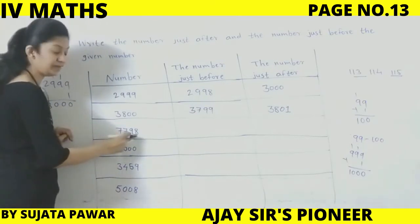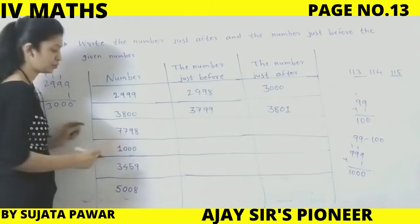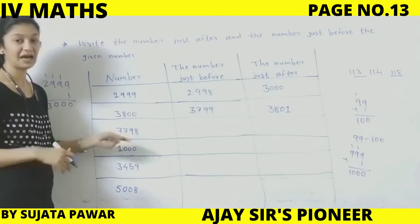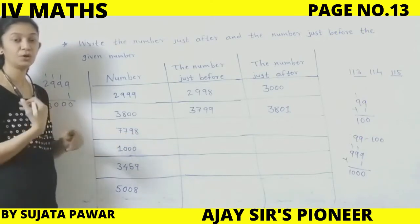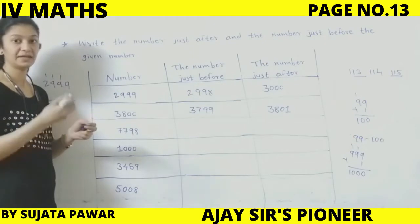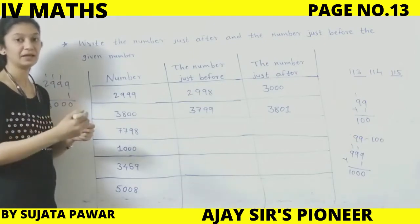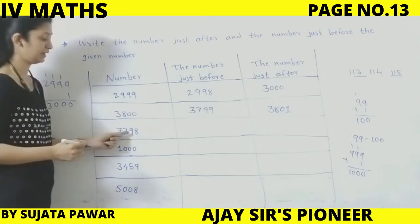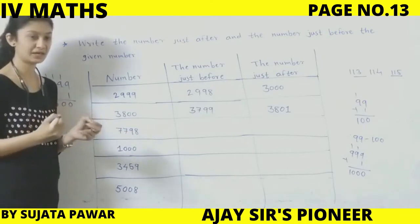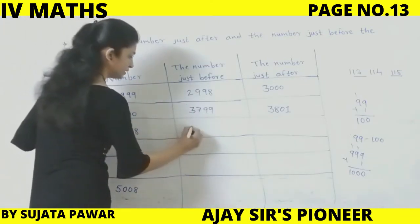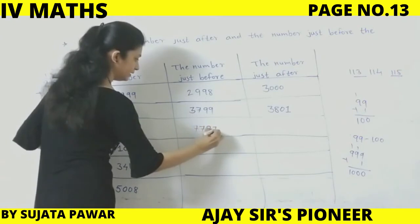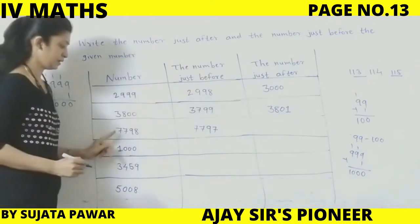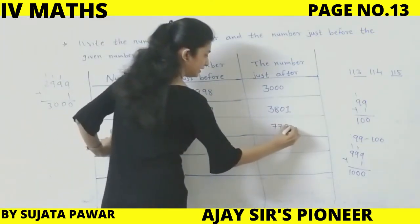Next: 7,798. You can see the last two digits are 98. 98 after is 99, and 98 before is 97. 8 ke pehle 7 aata hai, 8 ke baad 9 aata hai. So bilkul usi tarah se: just before is 7,797 — one step peeche jayenge. And just after is 7,799.